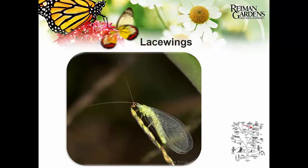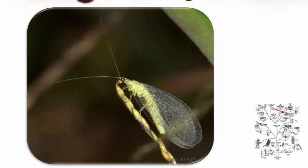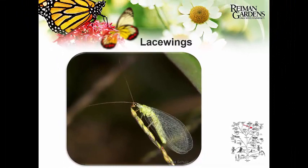Another good guy in your gardens: lacewings. There are green and brown lacewings — predators as both adults and immatures, eating many pest species like aphids right off your plants. Encouraging these in your garden is a good thing. Keep in mind that if you use chemical control for pest species, it will affect these beneficial insects too, so whenever possible minimize chemical use and be very point-specific when applying.